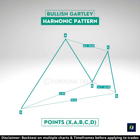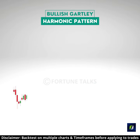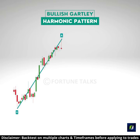The Gartley pattern has 5 points in order. The pattern begins with a sharp price increase from points X to A, which is the longest leg of the pattern.